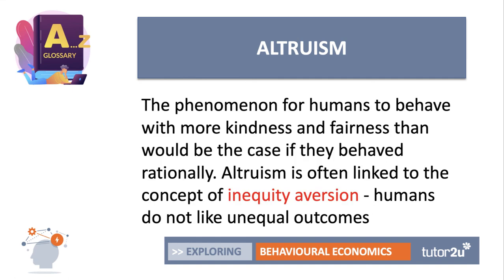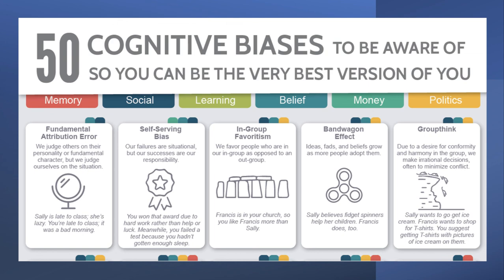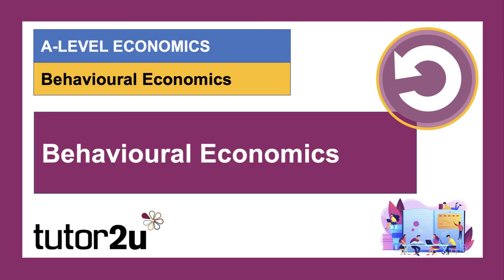Altruism is another important idea — the phenomenon of humans behaving with more kindness and fairness than would be the case if they acted rationally. In many ways, altruism can be a self-interested phenomenon: people get a satisfaction from giving, particularly in an age of social media where that giving can be made public. Altruism is also linked to the concept of inequity aversion — humans do not like unequal outcomes, and fairness is a fundamental issue in a world of growing income and wealth inequality. For more, visit visualcapitalist.com and search '50 cognitive biases' for a terrific infographic with great examples.